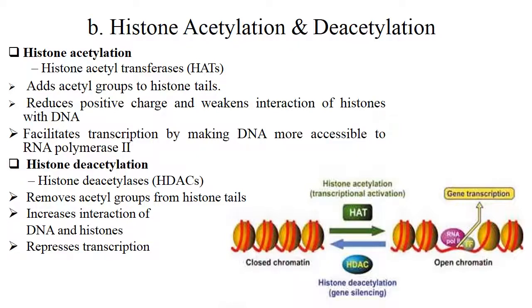Acetylation and deacetylation: Histone acetylation occurs through histone acetyltransferases. It adds an acetyl group to histone tails, which reduces positive charge and weakens the interaction of histones with DNA. This facilitates transcription by making DNA more accessible to RNA polymerase, increasing the transcription rate. Histone deacetylation does the reverse — the enzyme histone deacetylase removes acetyl groups from histone tails, increases DNA-histone interaction, and represses transcription.